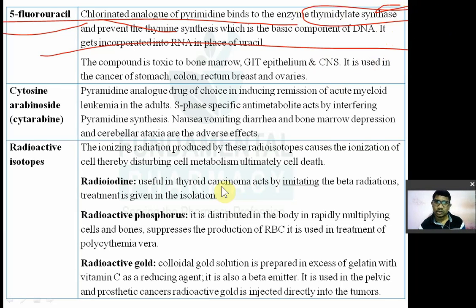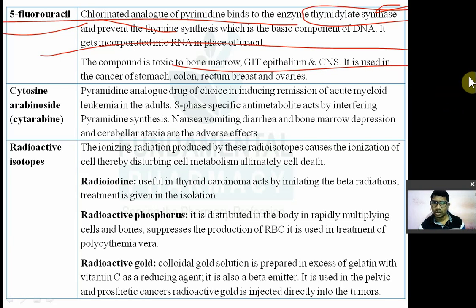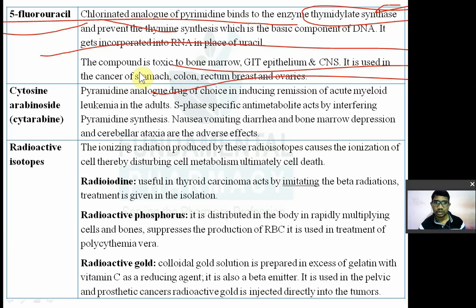The compound is very toxic to the bone marrow, GIT epithelium, and CNS. It is used in the treatment of stomach cancer, colon cancer, rectum cancer, breast cancer, and ovarian cancer.